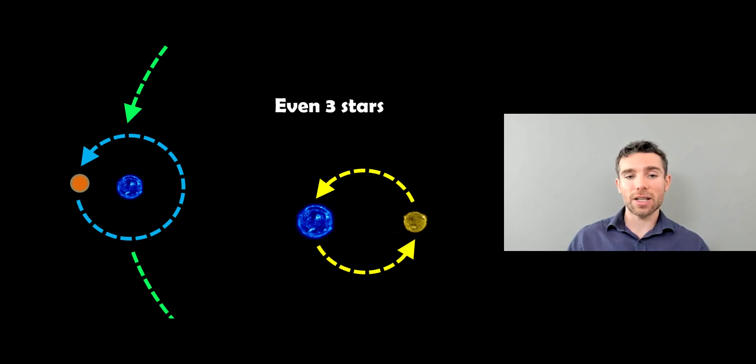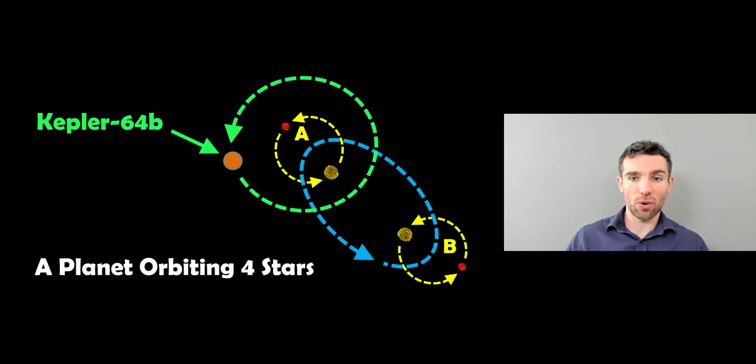And there are also planets that even orbit three stars. So maybe we've got a binary system, there's a third star that goes around the outside of that, and then the planet orbits that. So again, there's a reasonable amount of planets that orbit three stars, but there's also planets that orbit four.